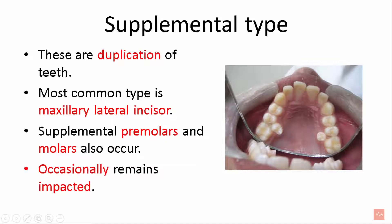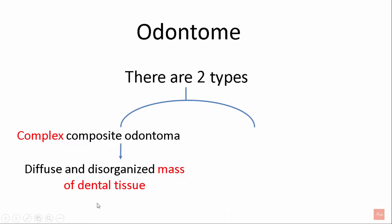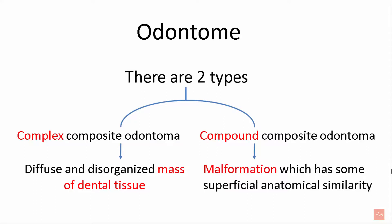Next is the odontome, and there are two types. First is the complex composite odontoma — it is a diffuse and disorganized mass of dental tissue. Second is the compound composite odontoma — it is a malformation which has some superficial anatomical similarities.